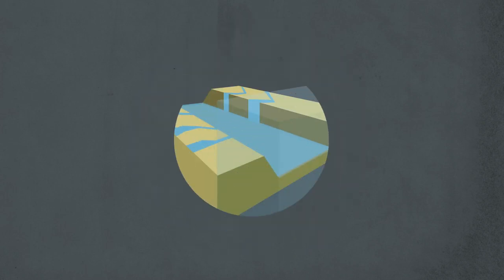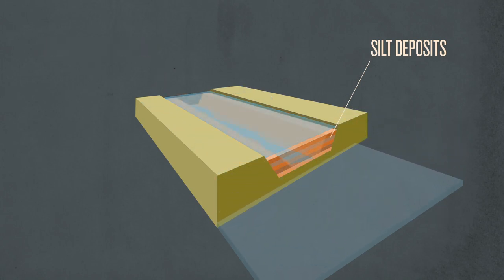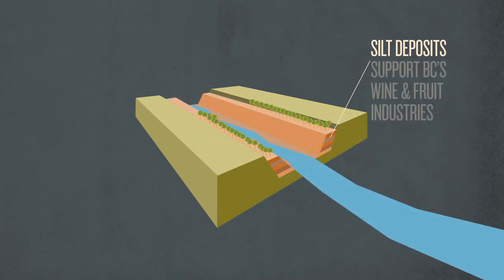In the Okanagan and Thompson Valleys, melting blocks of ice left great silt cliff benches of sediment that now support our wine and fruit industries.